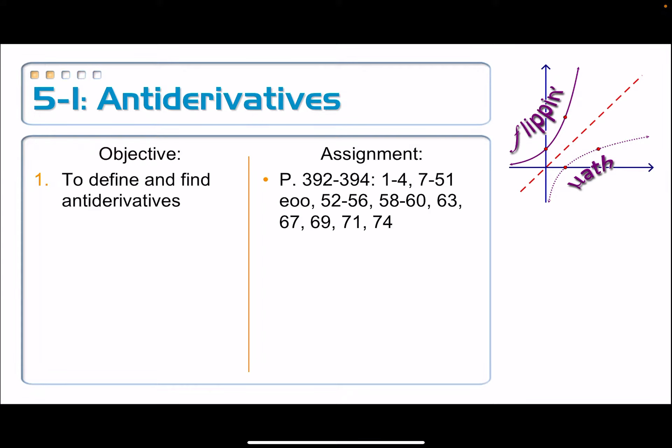This lesson assumes that we have already gotten a derivative and we wanted to work backwards in order to find the function that we originally started with. That is called an antiderivative. If you take a look at the objective here, we are defining and finding these things called antiderivatives.